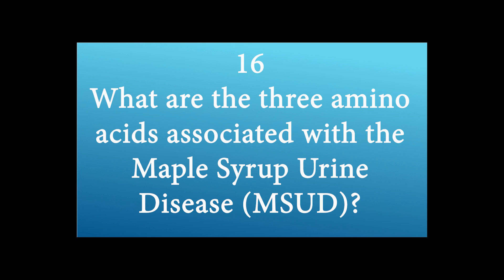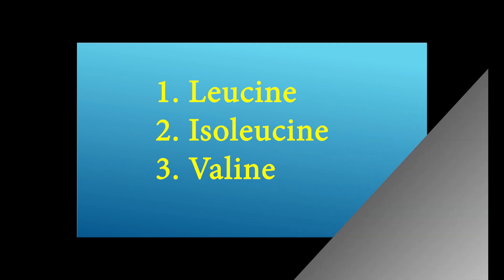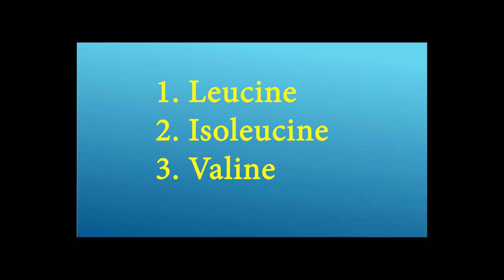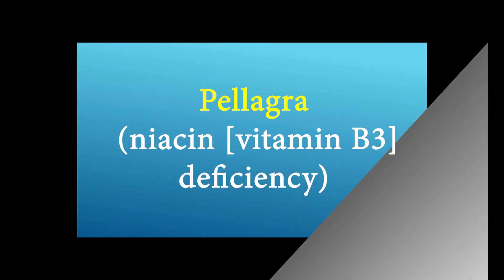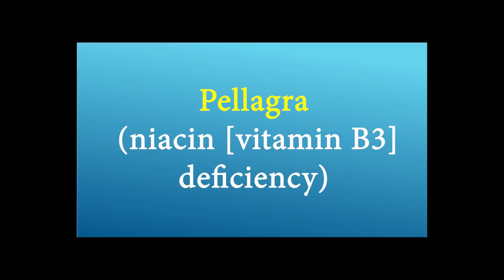What are the three amino acids associated with maple syrup urine disease (MSUD)? Leucine, isoleucine, and valine. A patient with diarrhea, dermatitis, and dementia — what is the diagnosis? Pellagra, caused by niacin (vitamin B3) deficiency.